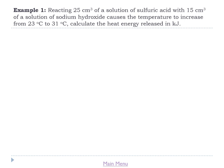Let's look at our first calculation. Whenever you get calculations in an exam, it's a really good idea to annotate, underline and highlight the question to make clear which values you're going to use and what's being asked. The question says: reacting 25 cm³ of sulphuric acid solution with 15 cm³ of sodium hydroxide solution causes the temperature to increase from 23°C to 31°C. Calculate the heat energy released in kilojoules. Always put a star next to what you're being asked to calculate.